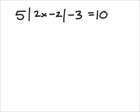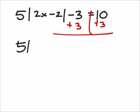So we need to get rid of that minus 3 by adding 3 to both sides. And that gives us, well we didn't do anything with this stuff. So we got 5 times the absolute value of 2x minus 2. This became 0. And this is equal to, 10 plus 3 is 13.